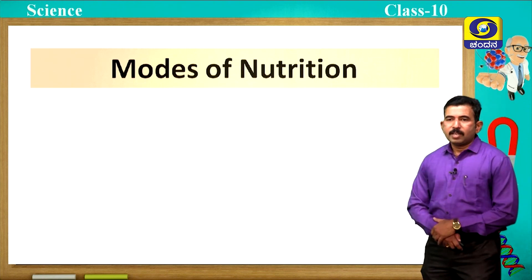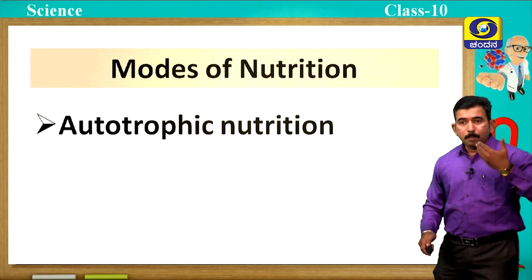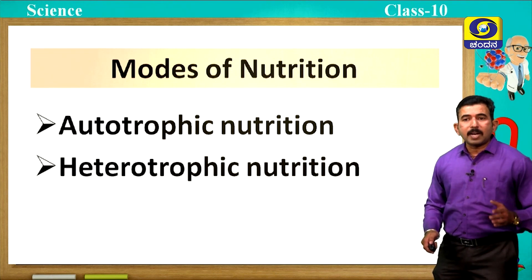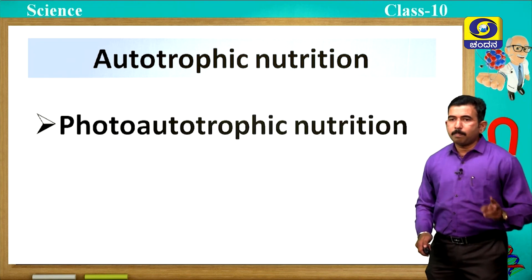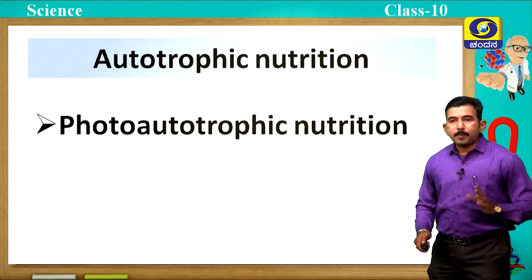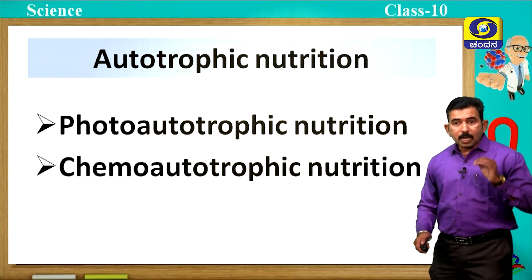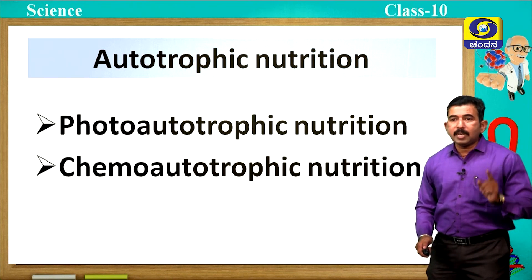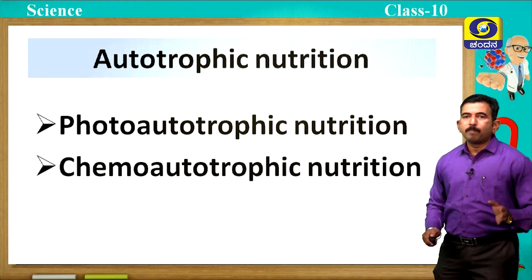Next let us study modes of nutrition. There are mainly two modes of nutrition. One is autotrophic nutrition, where the organism prepares its own food. The second is heterotrophic nutrition, where the organism directly or indirectly depends on plant and plant products. In autotrophic nutrition, there are mainly two types: first, photo-autotrophic nutrition, where organisms obtain their energy from sunlight — examples are plants and algae; and second, chemo-autotrophic nutrition, where organisms obtain their energy from chemicals — examples are green sulfur bacteria and purple sulfur bacteria.